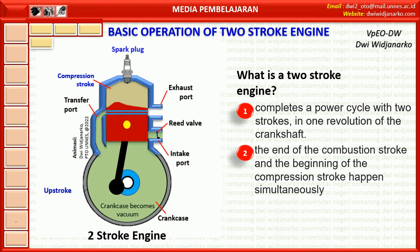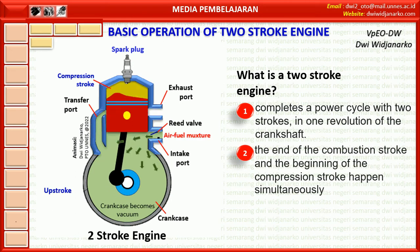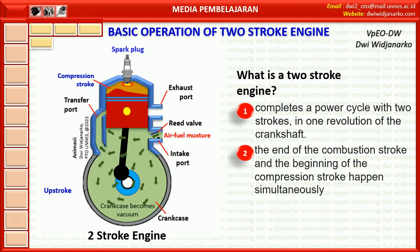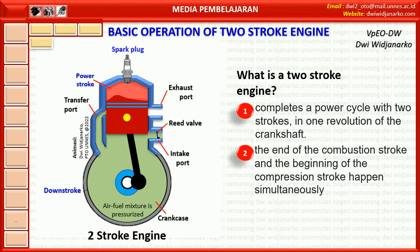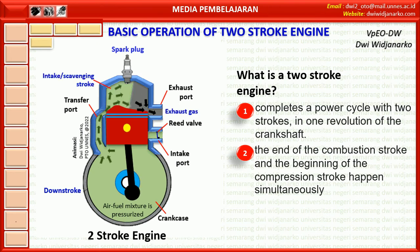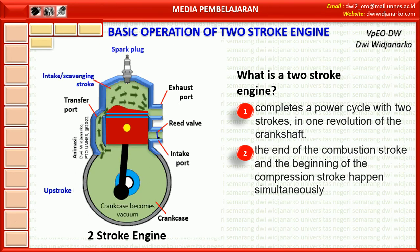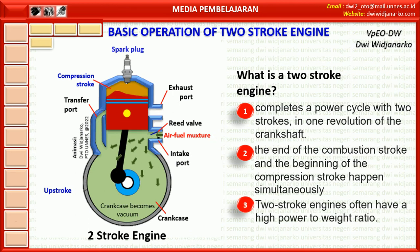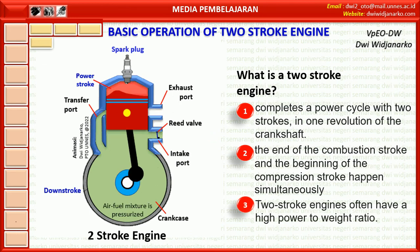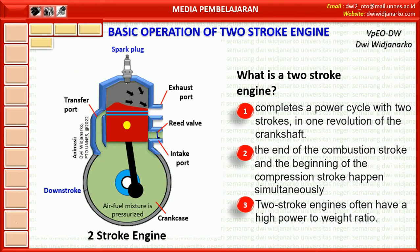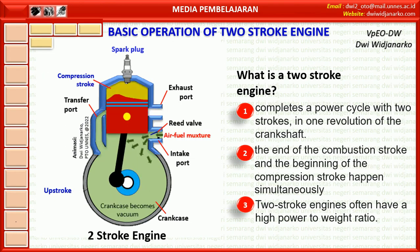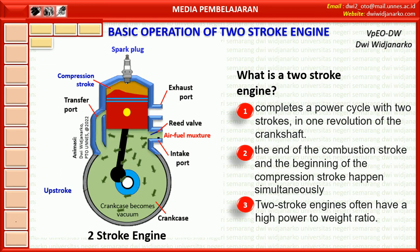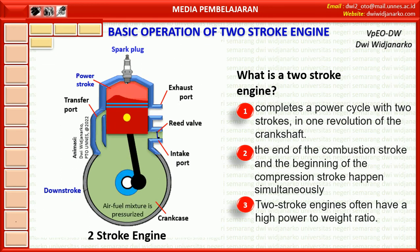In a two-stroke engine, the end of the combustion stroke and the beginning of the compression stroke happen simultaneously, with the intake and exhaust or scavenging functions occurring at the same time. Two-stroke engines often have a high power-to-weight ratio, with power available in a narrow range of rotational speeds called the power band. Two-stroke engines also have fewer moving parts than four-stroke engines.